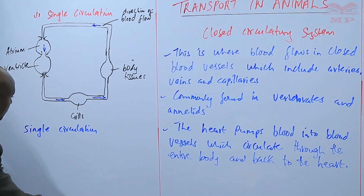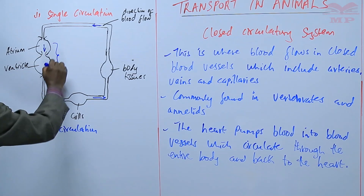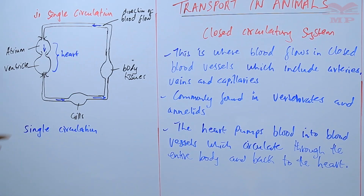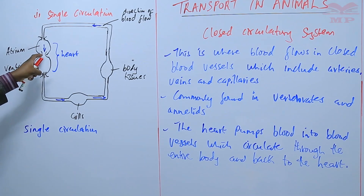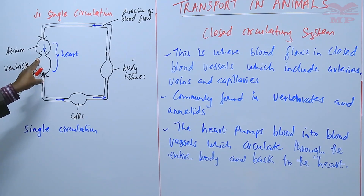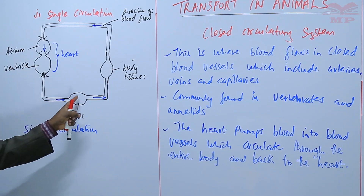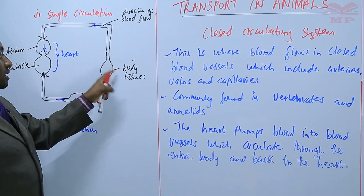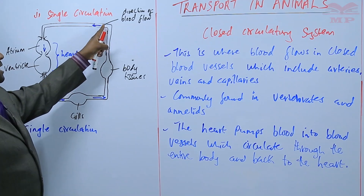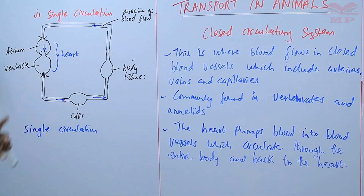In this diagram, the heart consists of two chambers — one atrium and one ventricle. When blood comes from body tissues, for example in fish, it enters the atrium and then into the ventricle. The ventricle pumps that blood to the gills where oxygen is added, and the blood becomes oxygenated.